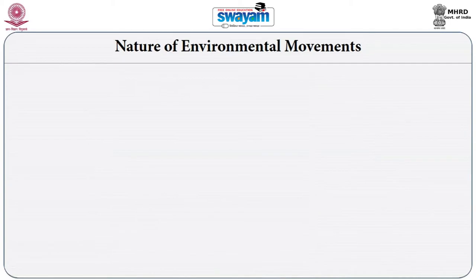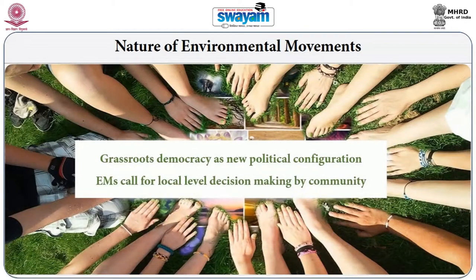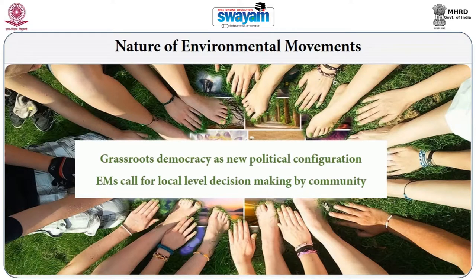The fourth characteristic of environmental movements is that they call for grassroots democracy as a new form of political configuration. Environmental movements call for local-level decision making by the community. Movements concerning local pollution and local environmental degradation — which have a severe impact on local people — essentially talk about greater decision making over these issues.